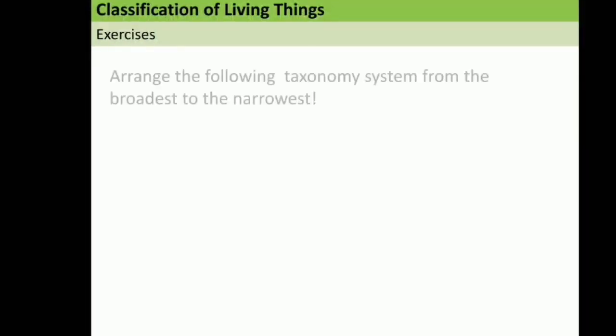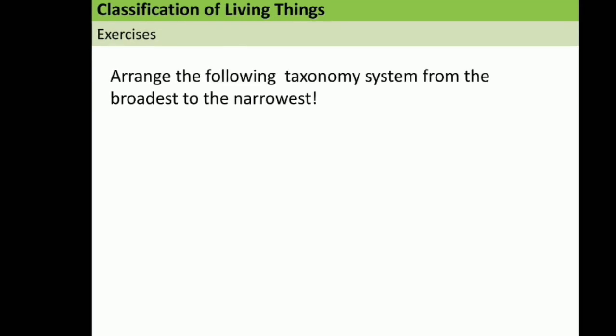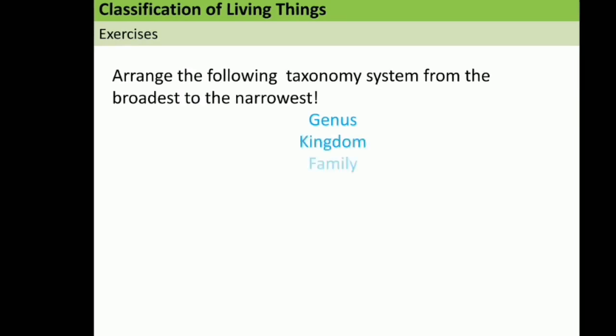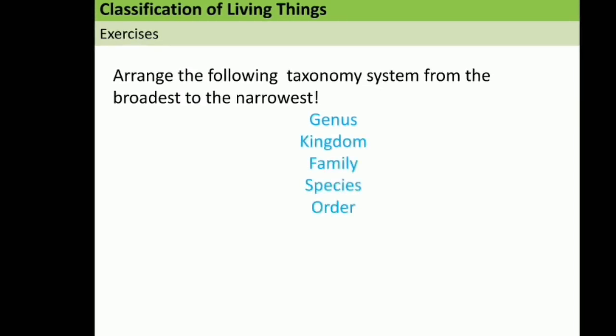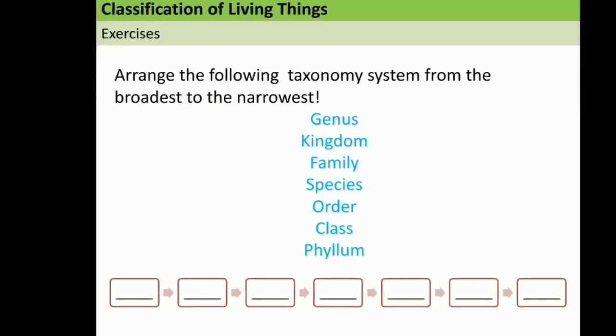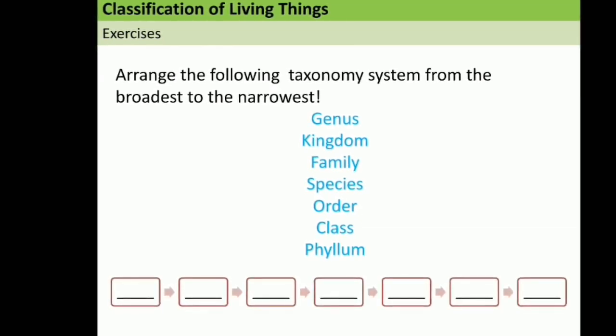The second exercise is arrange the following taxonomy system from the broadest to the narrowest. So, genus, kingdom, family, species, order, class, phylum, and try to arrange it and write it in the box.